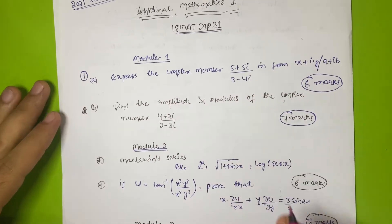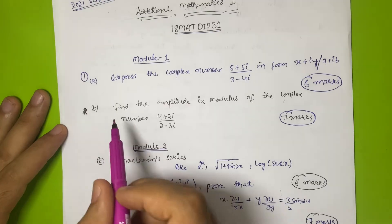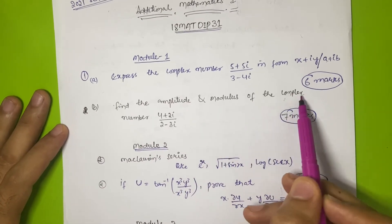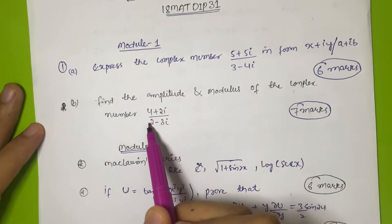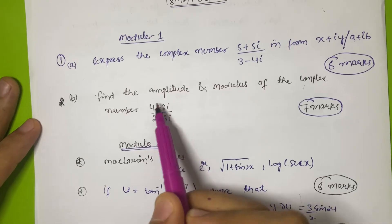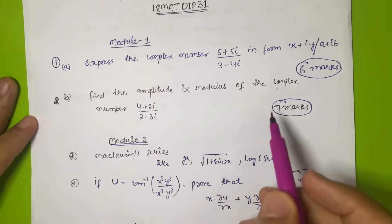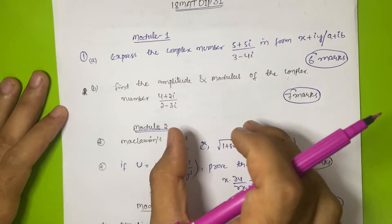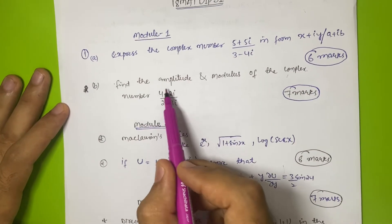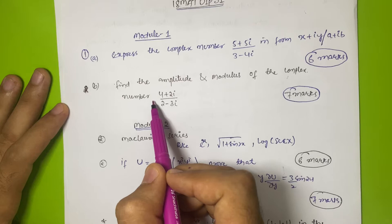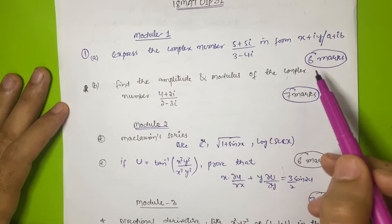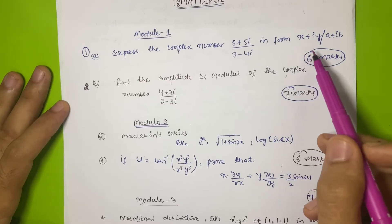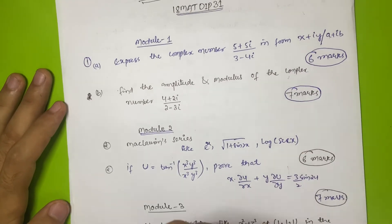The solution to this particular question is just three or four lines - it is a very simple topic. The second question in this module will be on amplitude and modulus of a complex number, for example (4 + 2i) / (2 - 3i). You just need to work with amplitude and modulus of the complex number, and you can secure 7 + 6 = 13 marks in this module.